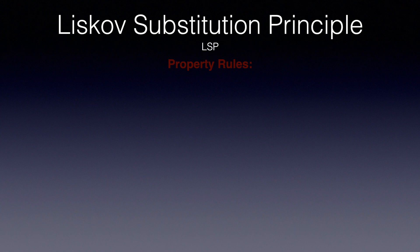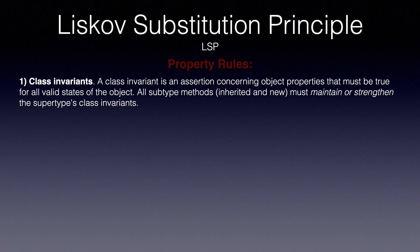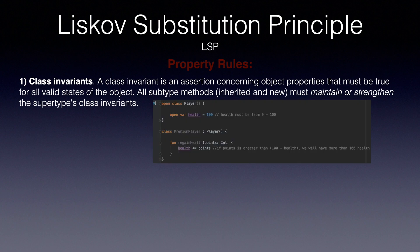Now let's see the property rules. Those rules have to do with the class's variables and properties, and how their values evolve or behave. With these rules, we can start to realize the behavioral subtyping idea — that you can subtype all you want, but it's not going to work if we break the intended behavior of the superclass. Starting with the class invariant rule: a class invariant is an assertion concerning object properties that must be true for all valid states of the object. All subtype methods, inherited and new, must maintain or strengthen the supertype's class invariants. Let's go back to our player class — we have health as a property, but it is ranging from 0 to 100. This rule is not validated somewhere, but we know as clients of this class that we expect that value to be inside this range. If we were to subclass it with a premium player that can go above 100 health, that could break clients of this class that do not expect this to be the case.